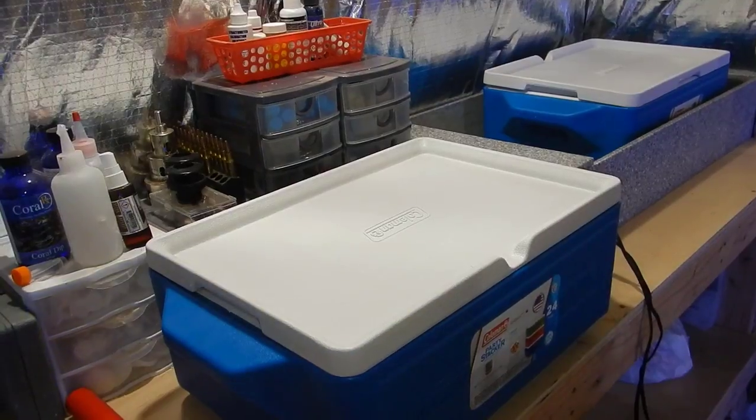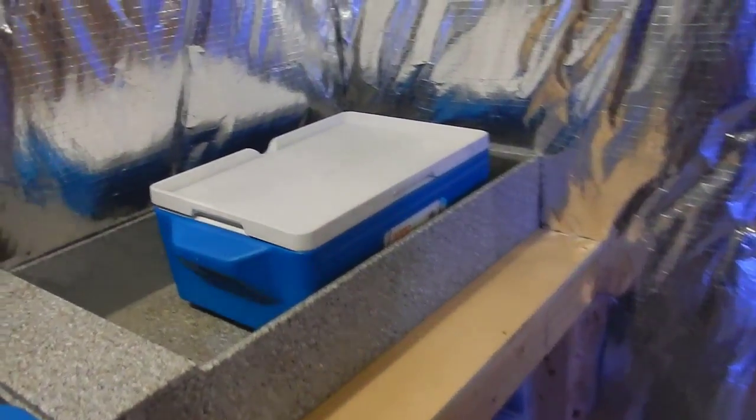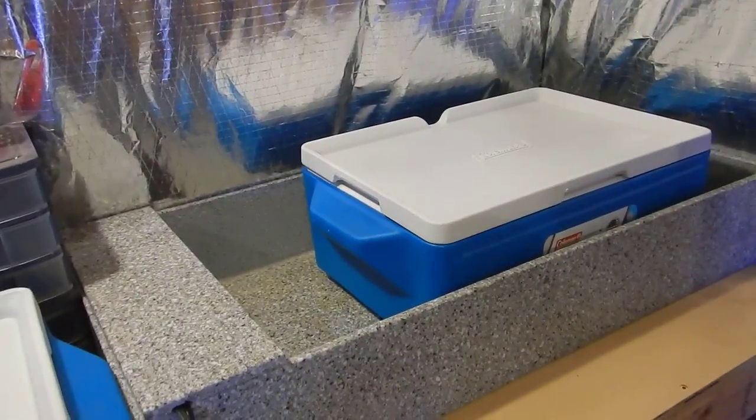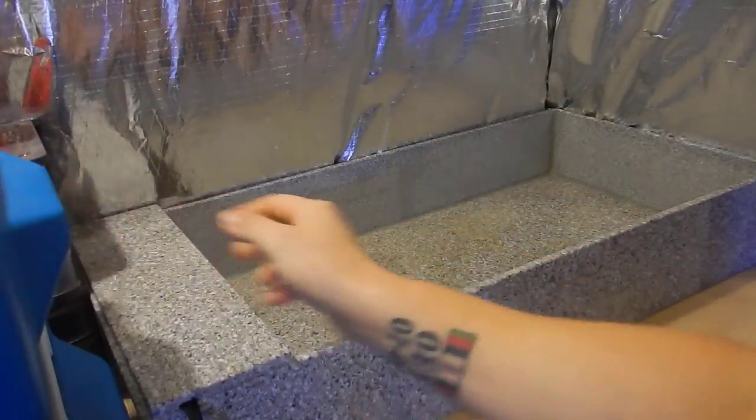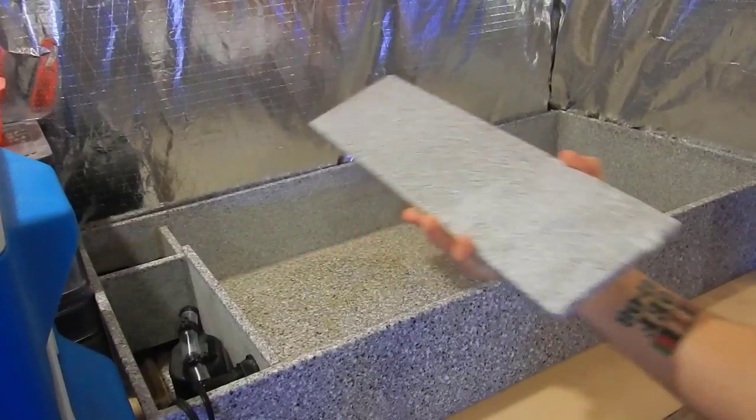Let's go ahead and move over to the frag tank. This is the frag tank that Billy Pipes built for me last year. It's made out of Corian and the setup is about the same.